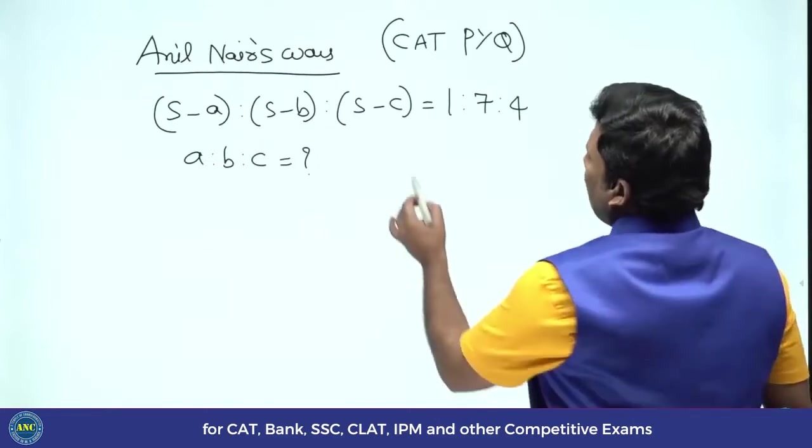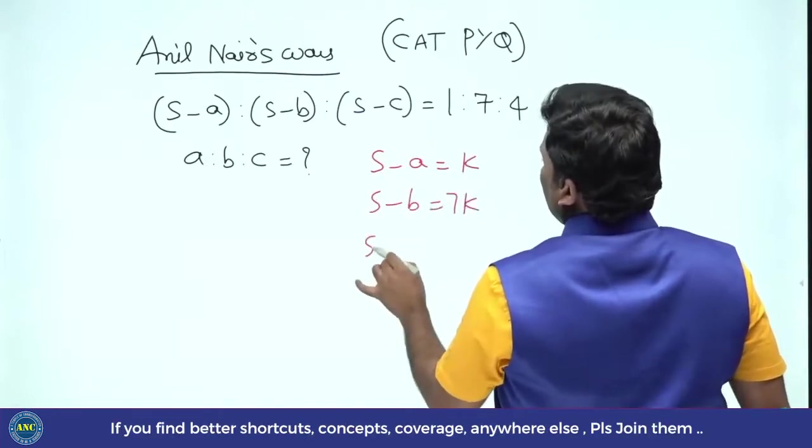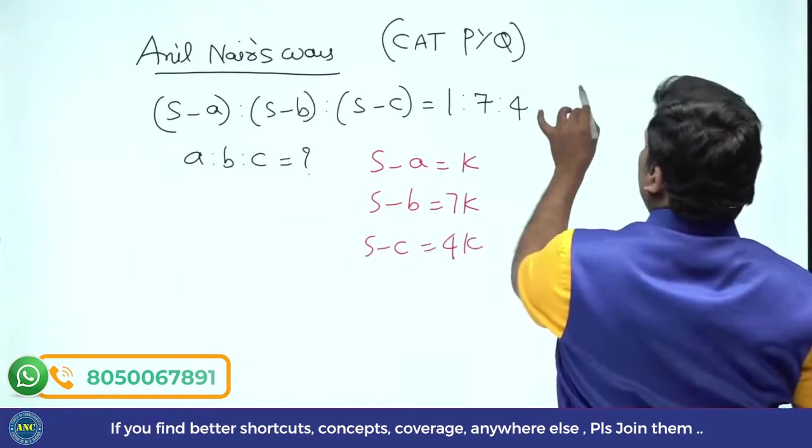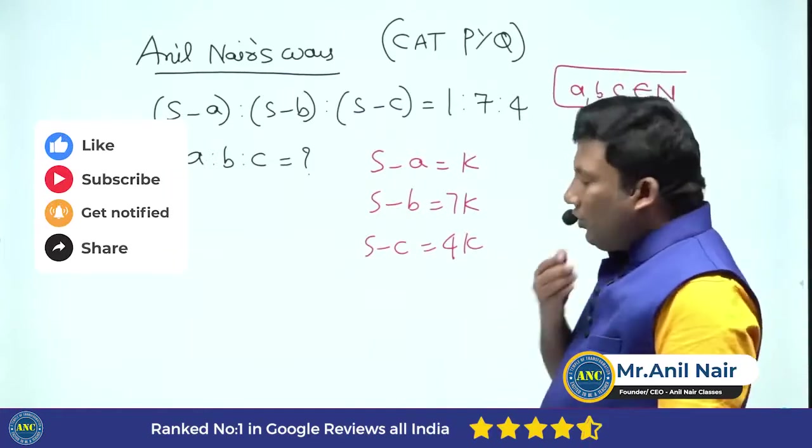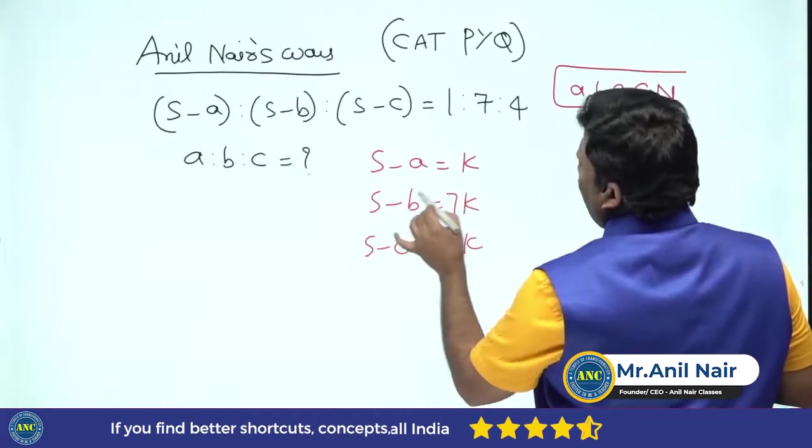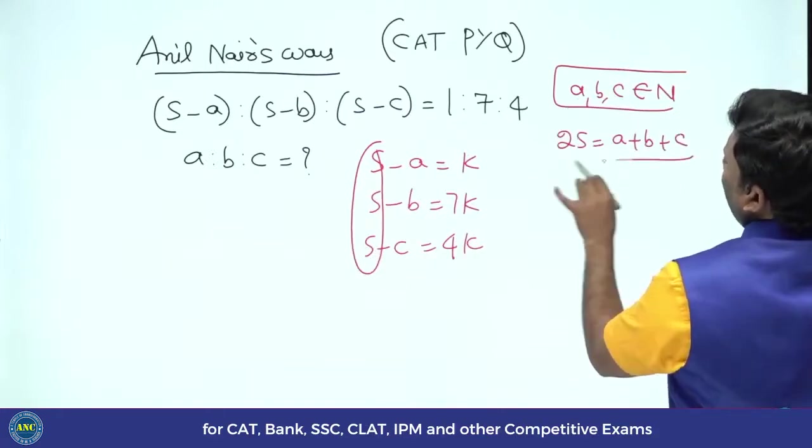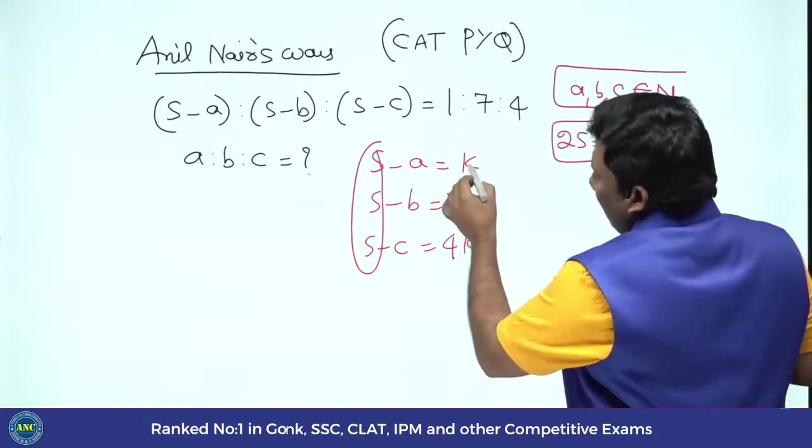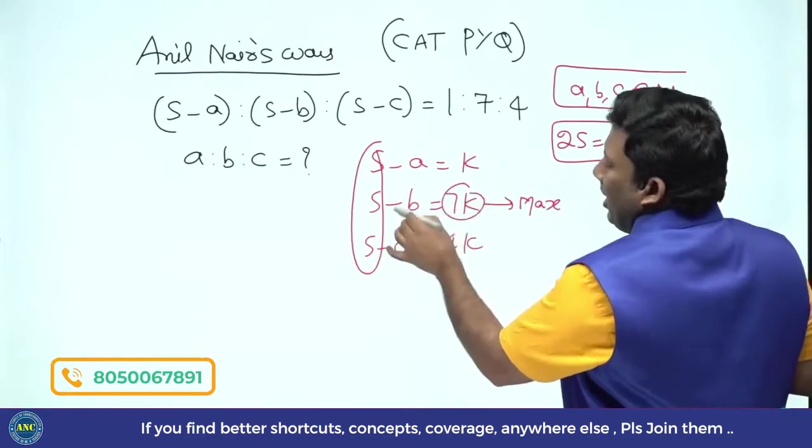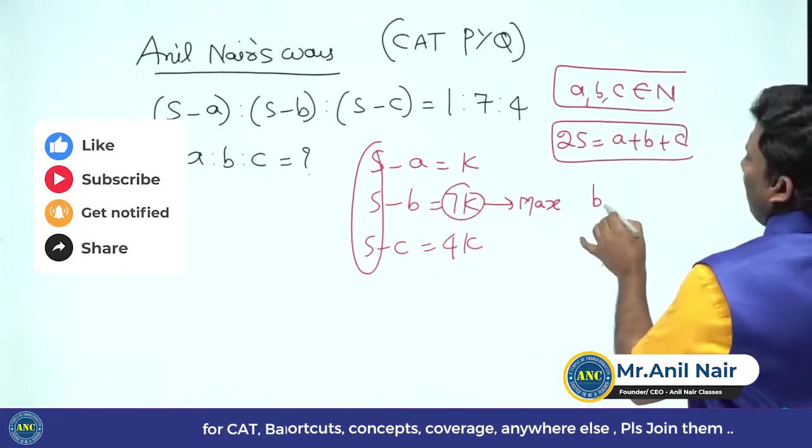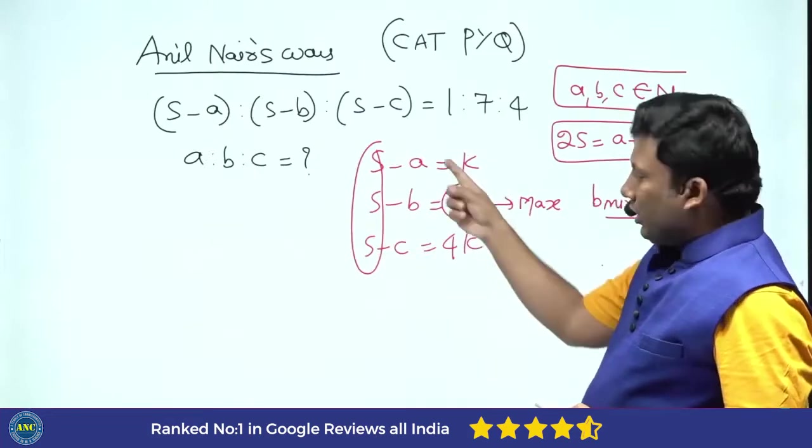Now see A is to B is to C. If I am solving this question, how I will solve? S - A is K, S - B is 7K, S - C is 4K. A, B, C are natural numbers. I do not know the traditional method. What I know is see the question and find out an optimal way. S - B is 7K. S is constant here. It is given as 2S equivalent to A + B + C which is a constant. What is maximum? 7K is maximum. Right hand side it is maximum. Left hand side it is minus B. That means B should have a minimum value.